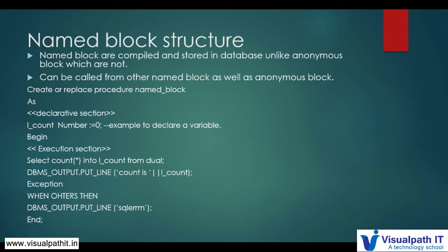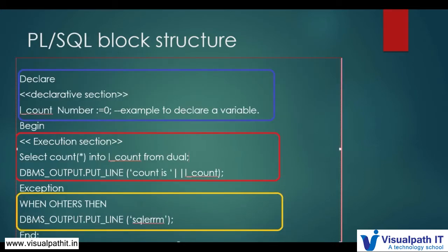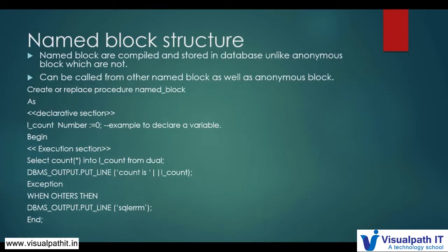Now, what is a named block? Going back to the previous example, you can see we have not given any name to that block — we simply started with DECLARE, BEGIN, EXCEPTION, and END. This is called an anonymous block. An anonymous block is not pre-compiled and not stored in the database, and there is no name reference to it. That is the perfect example of an anonymous block.